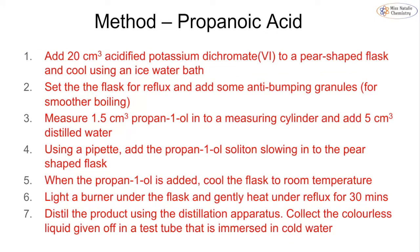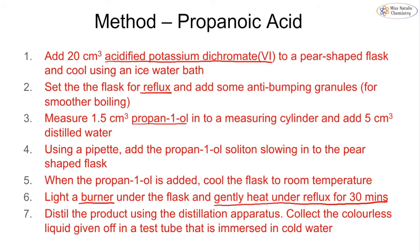When creating propanoic acid, we again use acidified potassium dichromate and cool it in a water bath. This time we set up the flask for reflux instead of distillation. Using the same method, we measure out propan-1-ol, slowly add it, cool the flask to room temperature, light the burner, and heat under reflux gently for 30 minutes. We then carry out distillation and collect the colourless liquid. The key difference is reflux followed by distillation.